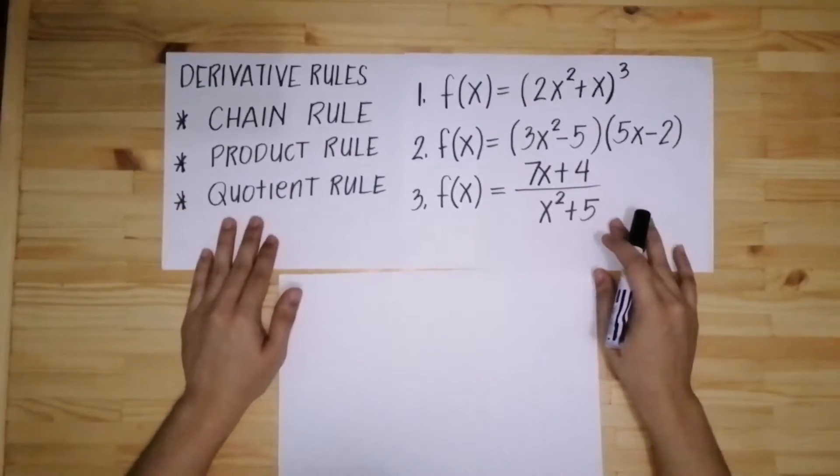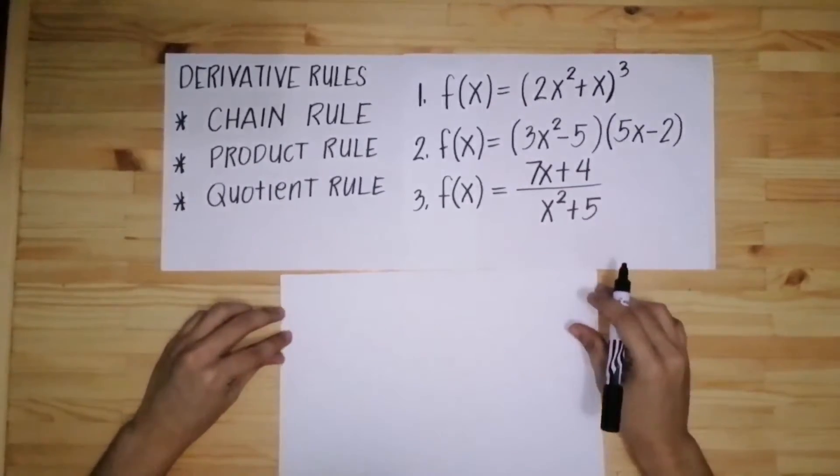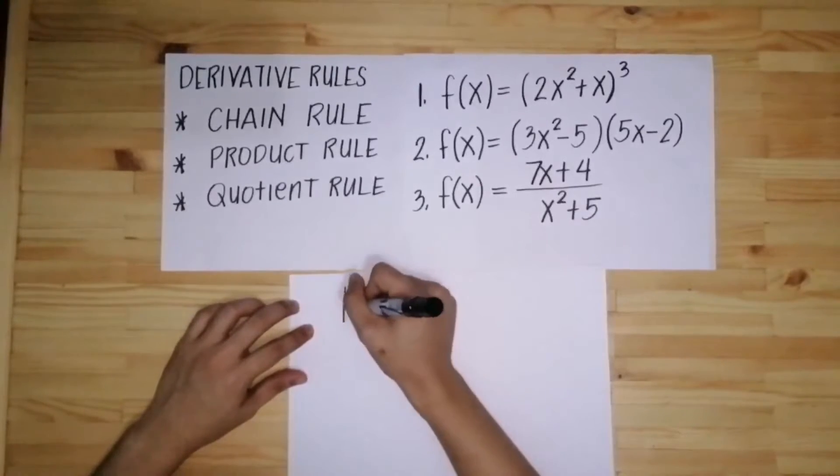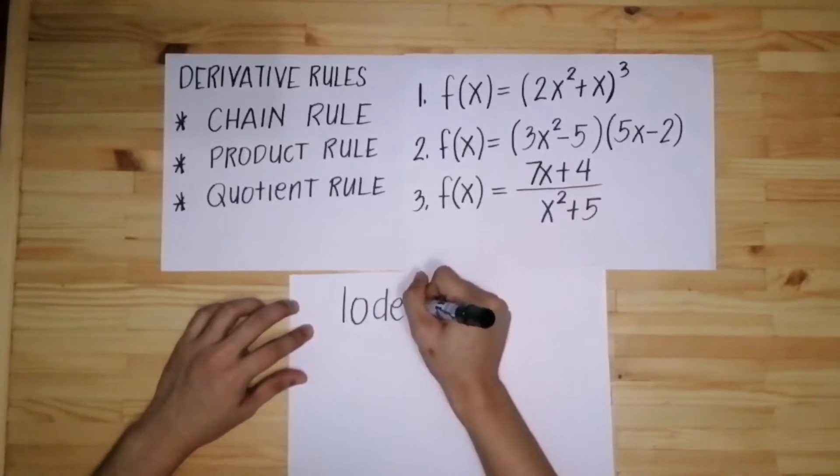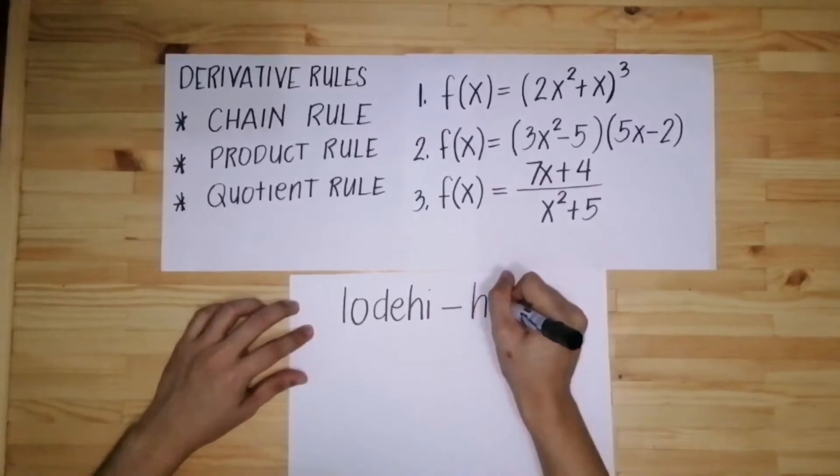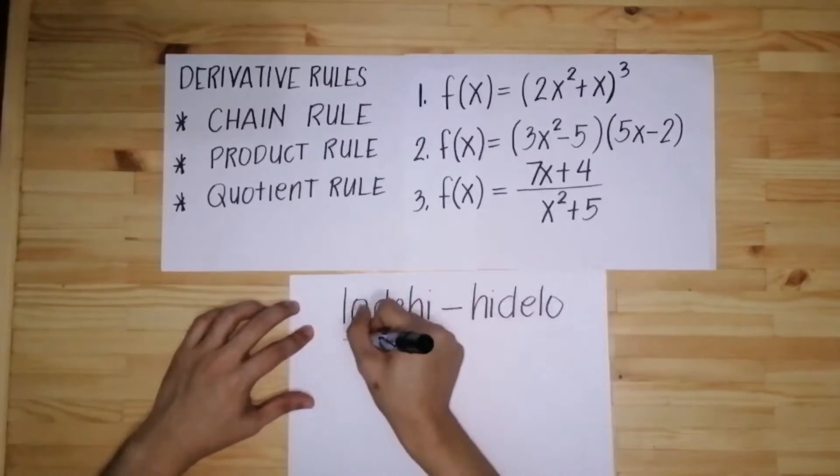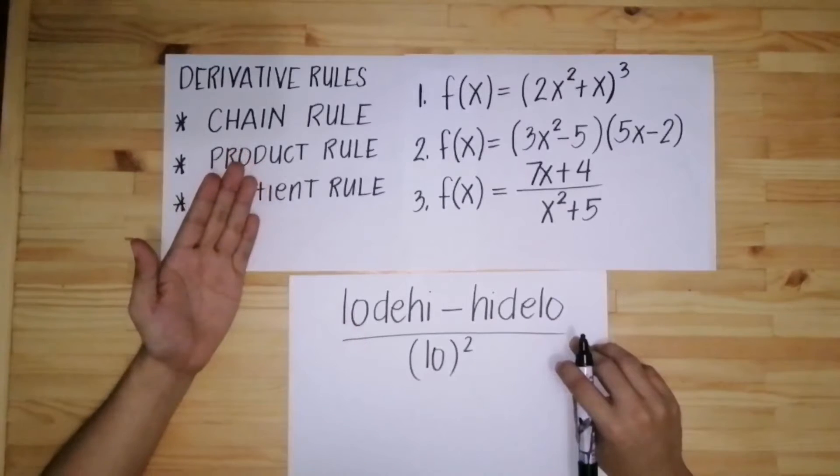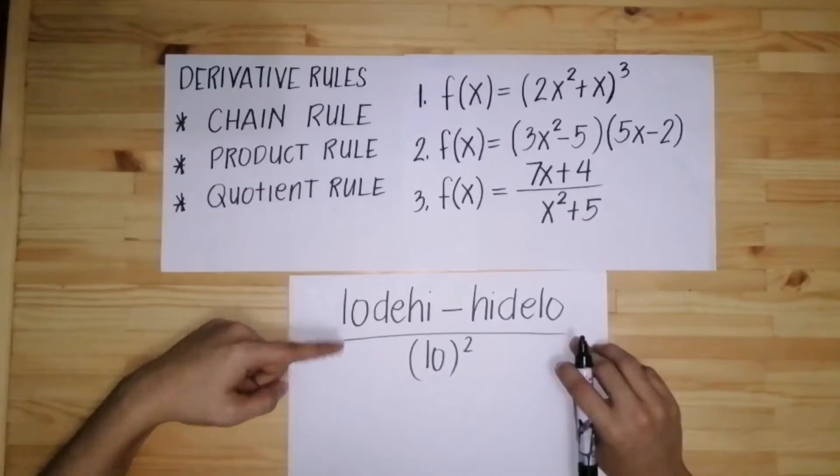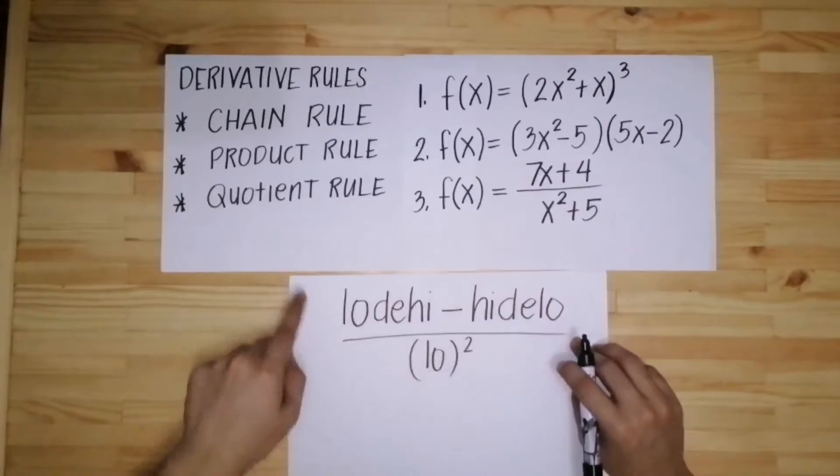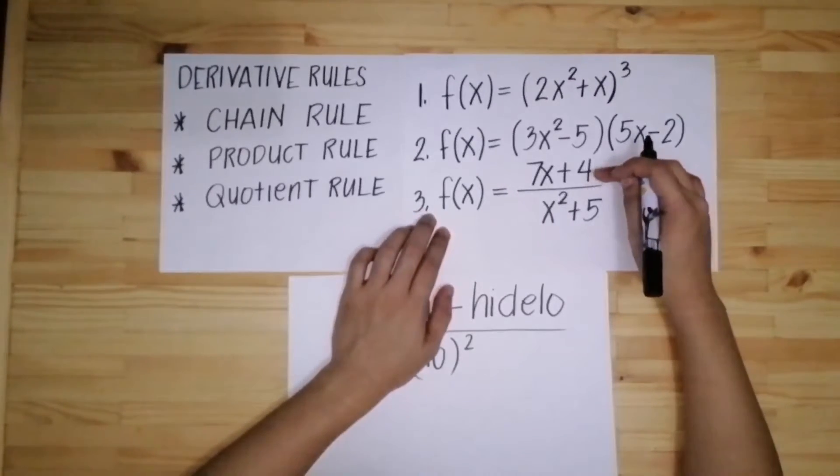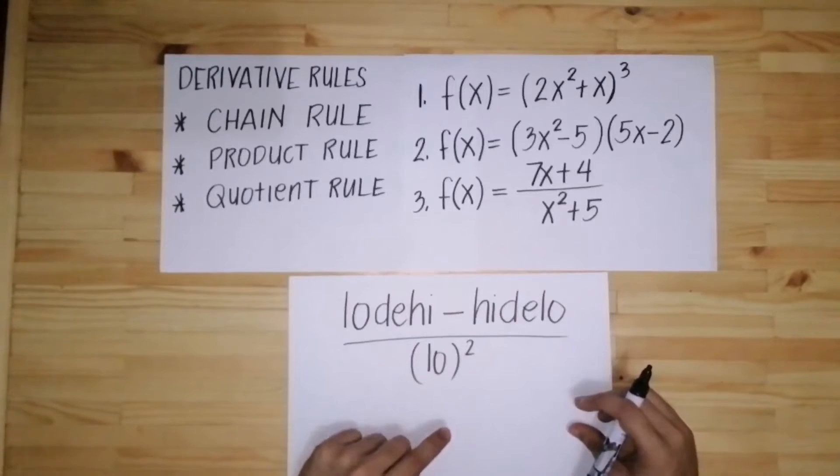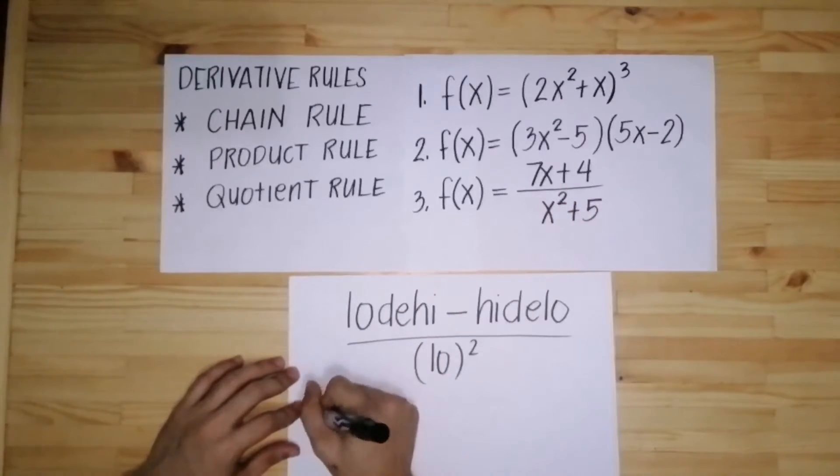Now let's proceed with the quotient rule in number 3. Ang ginagawa natin for the quotient rule is this. Kailangan na sundin tong formula na to. Meron tayong low d high minus high d low over low squared. So ito yung formula natin. Yung low ibig sabihin yung baba, yung high yung taas. Yung d meaning derivative. So example in number 3, kapag meron kayo nakita yung numerator and denominator or a fraction of two factors, gagamit kayo ng quotient rule.